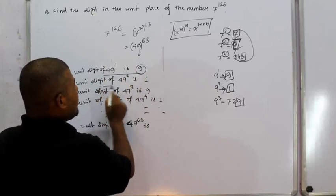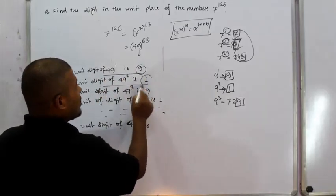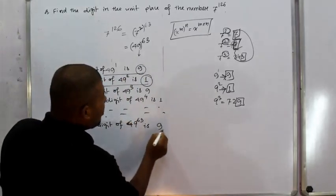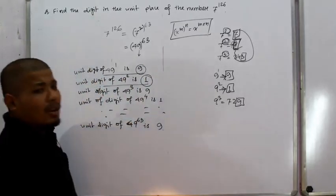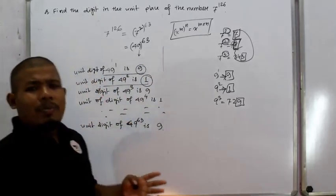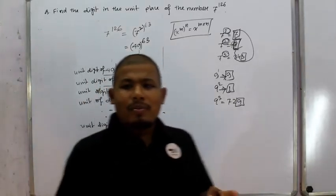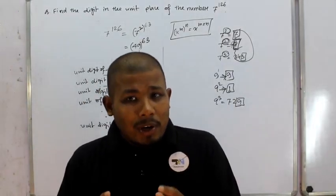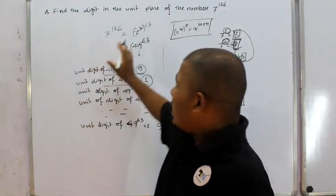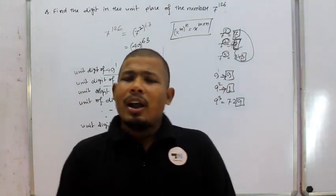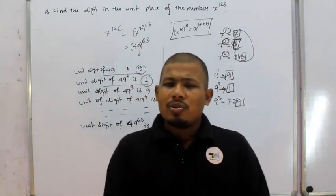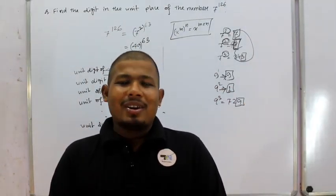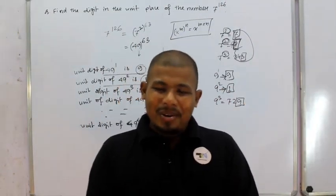The odd number gives unit digit 9, and the even number gives 1. So the answer is 9. It's very simple. Please don't forget to subscribe to the channel. This is a great question. I'll see you next time.